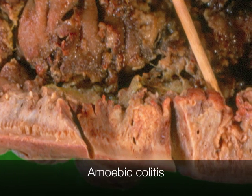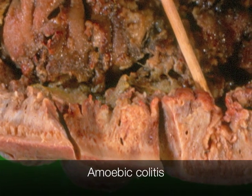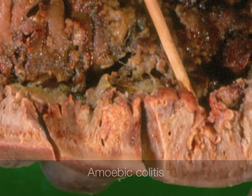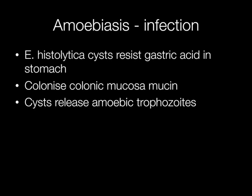This is a segment of colon that shows features of amoebic colitis. The amoebae enter the gastrointestinal tract as cysts, and the cysts resist gastric acid in the stomach, allowing them to pass down into the colon where they colonise the mucin on the colonic mucosa. It is here that the cysts release the amoebic trophozoites.